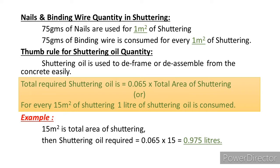Nails and binding wire: 75 grams of nails are used for 1 square meter of shuttering, and 75 grams of binding wire is consumed for every 1 square meter of shuttering. Thumb rule for shuttering oil: shuttering oil is used to de-frame the concrete easily. Total shuttering oil = 0.065 × total area of shuttering, or 1 liter per 15 square meters. For example, for 15 m² of shuttering, oil required = 0.065 × 15 = 0.975 liters.